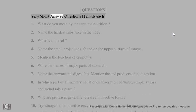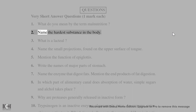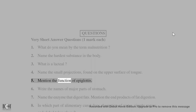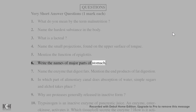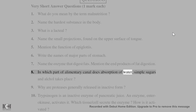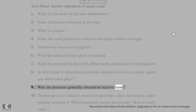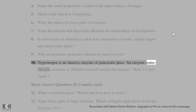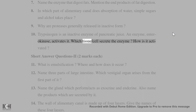Questions — Very short answer (1 mark each): 1. What do you mean by the term malnutrition? 2. Name the hardest substance in the body. 3. What is a lacteal? 4. Name the small projections found on the upper surface of the tongue. 5. Mention the function of epiglottis. 6. Write the names of the major parts of the stomach. 7. Name the enzyme that digests fats; mention the end products of fat digestion. 8. In which part of the alimentary canal does absorption of water, simple sugars, and alcohol take place? 9. Why are proteases generally released in inactive form? 10. Trypsinogen is an inactive enzyme of pancreatic juice — which tissue/cell secretes it, and how is it activated by enterokinase?